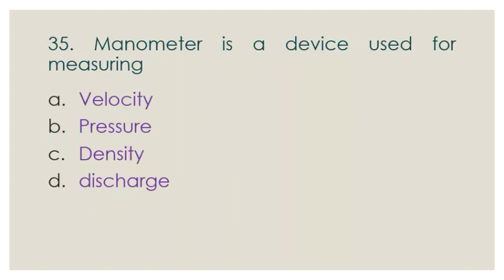Question number 35: A manometer is a device used for measuring — options: a) velocity, b) pressure, c) density, d) discharge. A manometer is used for measuring pressure, so option B is the correct answer.